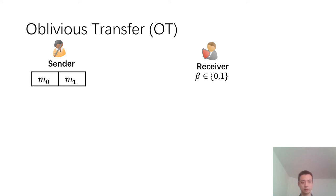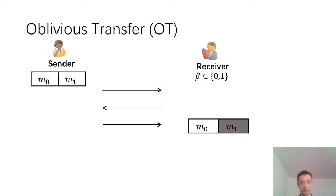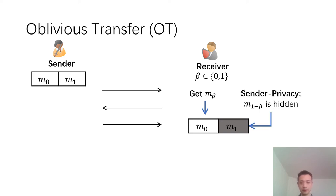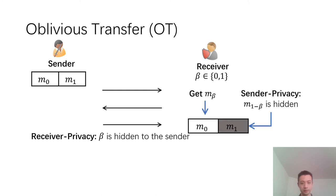The second protocol we study is oblivious transfer, which is a two-party protocol with a sender and a receiver. The sender has two messages M₀ and M₁; the receiver has a single bit β. After some interaction, the receiver gets M_β, the message at its chosen position. For the sender's privacy, the other message M_{1-β} must be hidden. For the receiver's privacy, its input bit β must be hidden from the sender.